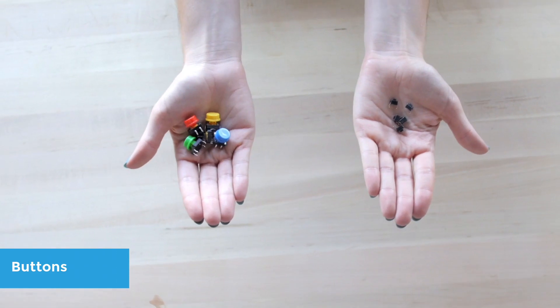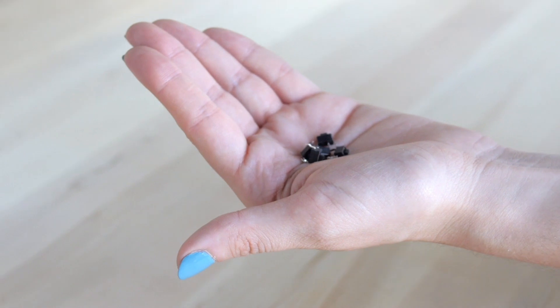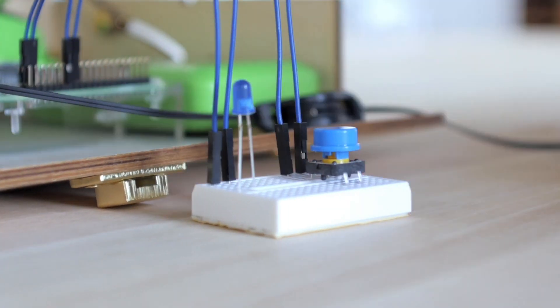Buttons. There are two types of buttons in your kit. Large colored ones and small black ones. The only major difference between these buttons is the way that they plug into the breadboard.